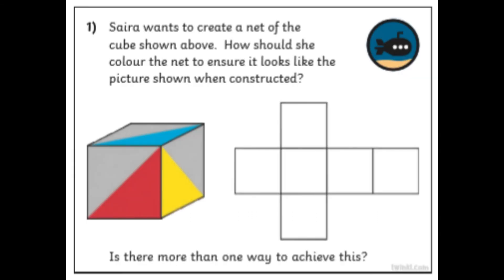And then chilli three. So Sarah wants to create a net of the cube shown above. However, I'm actually, it says above, but actually I put it below. So we'll just, we've passed that. How should she color the net to ensure it looks like the picture shown? So you can see we've got some grey, blue, red, and yellow. Noticed how the red and yellow are joined together at an edge, but the blue isn't. Maybe your best method with this one is to draw some nets and shade them in and see if you can cut them out and create the cubes. The smaller you do it, the fiddlier it is. So maybe try and do a few larger ones. And as it says, is there more than one way to achieve it? So how many solutions can you find?